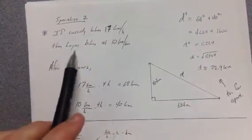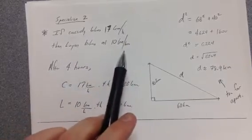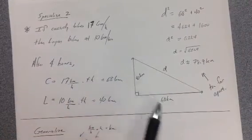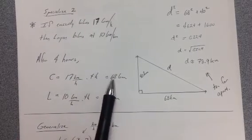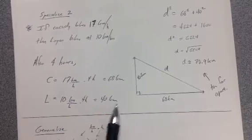So, Cassidy bikes 17 kilometers per hour. That means Logan is at 10 kilometers per hour. They're both going at a fair clip, more commensurate with a fight. Now after 4 hours, Cassidy went 17 kilometers per hour times 4 hours, that's 68 kilometers. 40 kilometers for Logan.